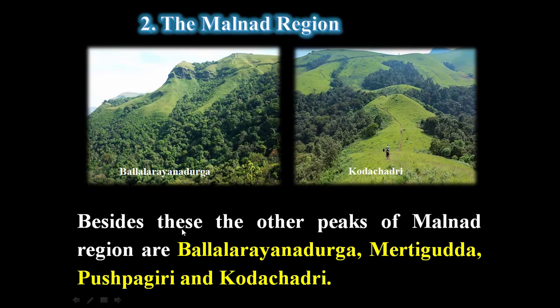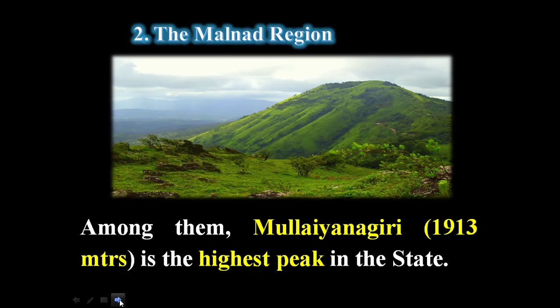Besides these, the other peaks of Malnad region are Ballala Rayana Durga, Merti Gudda, Kushpagiri, and Kodachadri. Among them, Mullayanagiri at 1,913 meters is the highest peak in the state.